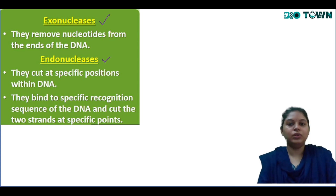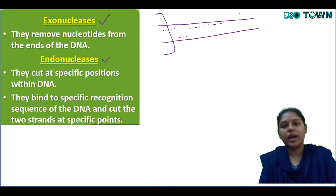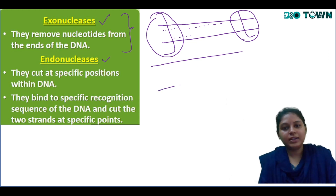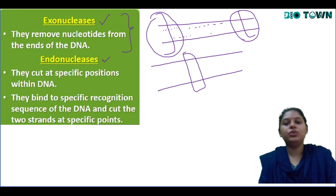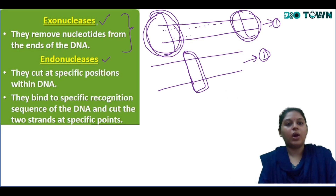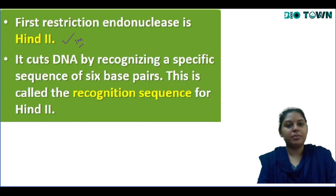Exonucleases are those which cut the DNA segments towards their ends. Endonucleases cut the DNA in between. That is the major difference: exonucleases cut towards the end, while endonucleases cut in between.